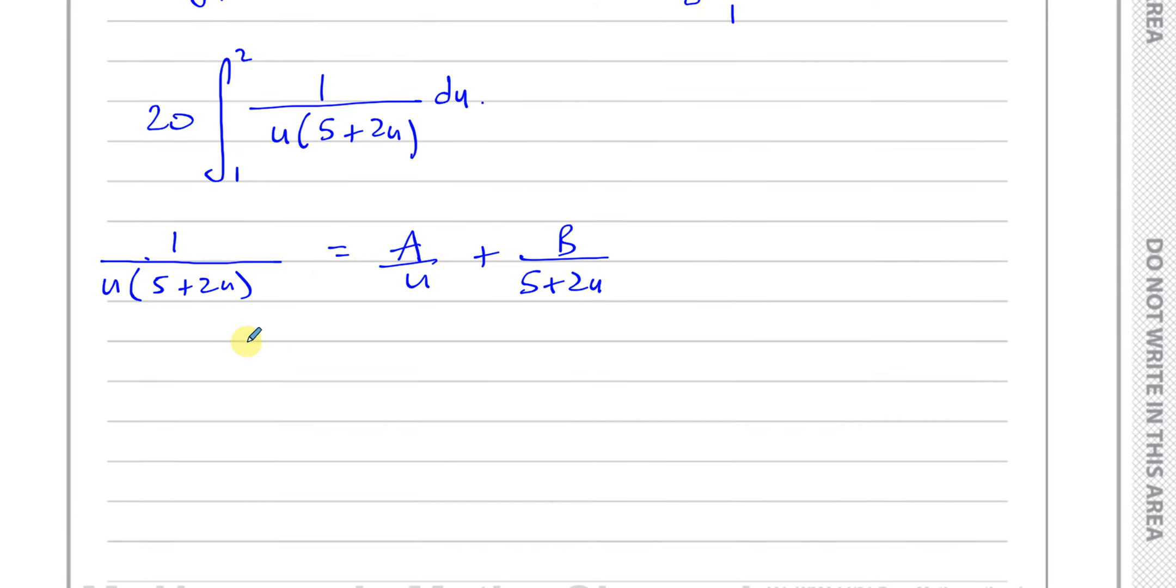To find a and b here, I can multiply throughout by u times 5 plus 2u, which will leave me with 1 on this side. I'm left with a times 5 plus 2u plus b times u. So I can now find the values of a and b. If I compare the constants on this side, I have 1. On this side, the only constant I have is 5a. Therefore, a is going to be 1 over 5.